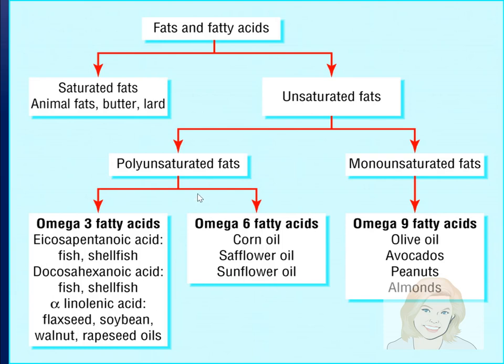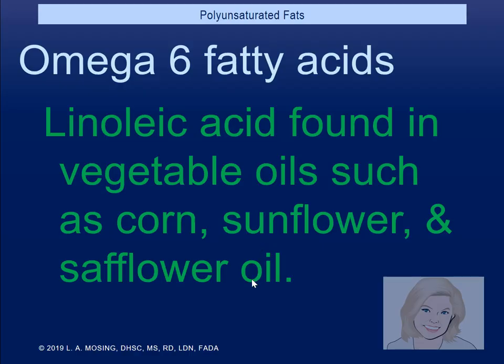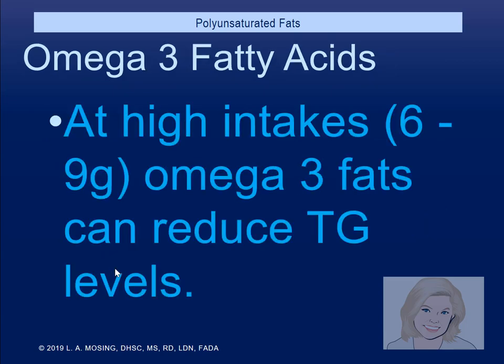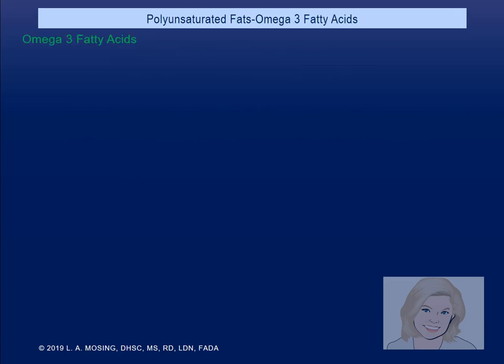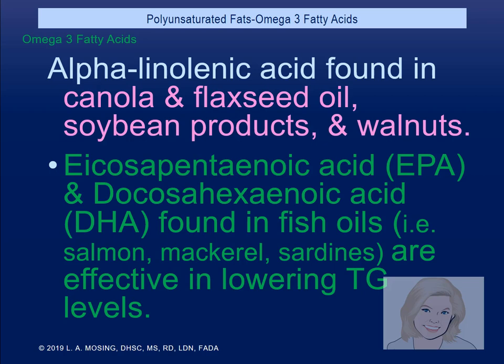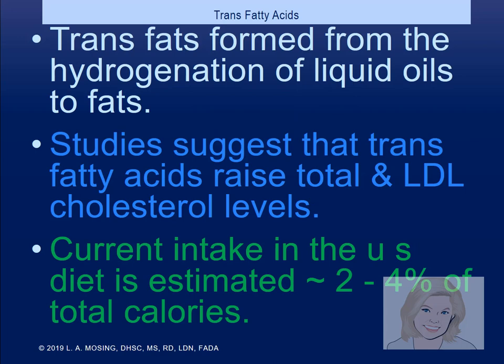Omega-6 fatty acids like linoleic acid are found in corn oil or safflower oil — more pro-inflammatory. Omega-3, also called N3 fatty acids, will reduce triglycerides, which is why some HMOs are giving older patients omega-3 when their triglyceride levels are high. With omega-3 fatty acids, you're eating more plant-based, more nuts, and more fish — all anti-inflammatory. On the other hand, trans fats from partially hydrogenated foods like margarine will raise your total and LDL cholesterol, which is why the government wants zero trans fat.